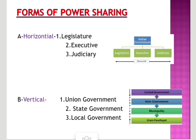First is horizontal. When power is shared among the various organs at the same level — legislature, executive, and judiciary — it is known as the horizontal form of power sharing. This form ensures that none of the organs of the government gets unlimited power, and each organ keeps a check on the other.